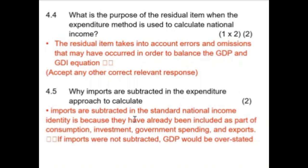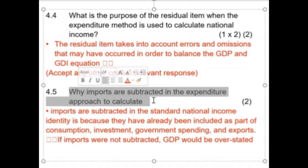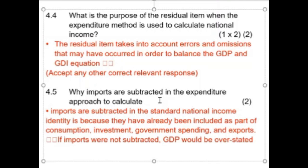Why are imports subtracted in the expenditure approach? Because it is a leakage — money leaving our country. Yes, we get Apple iPhones that we import, but our hard-earned South African rands are leaving the country. Imports are subtracted because they have already been included as part of consumption, investment, government spending, and exports. If imports were not subtracted, GDP would be overstated.